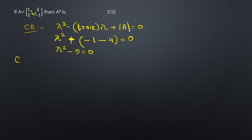Now we apply the Cayley-Hamilton theorem: replace lambda by A. So A squared minus 5I equals 0, or A squared equals 5I.